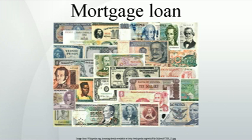The two basic types of amortized loans are the fixed rate mortgage and adjustable rate mortgage, also known as a floating rate or variable rate mortgage. In some countries, such as the United States, fixed rate mortgages are the norm, but floating rate mortgages are relatively common. Combinations of fixed and floating rate mortgages are also common, whereby a mortgage loan will have a fixed rate for some period — e.g., the first five years — and vary after the end of that period.